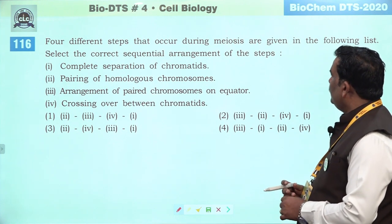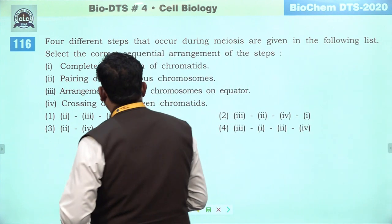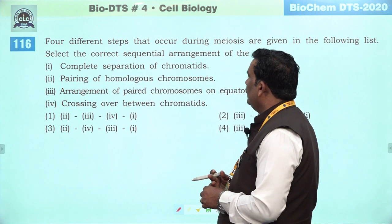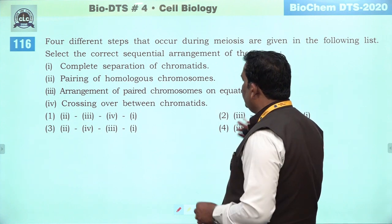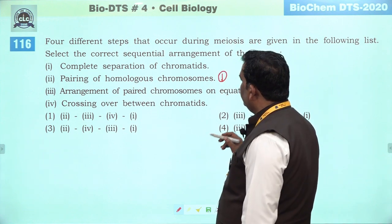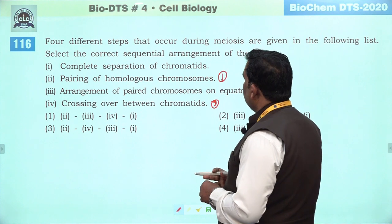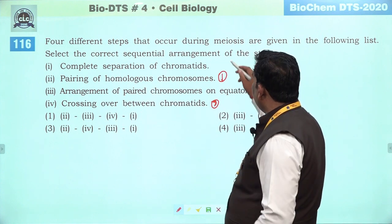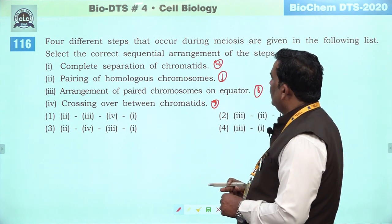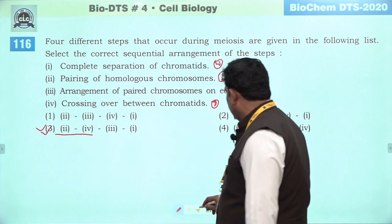Next question: four different steps that occur during meiosis — arrange in sequence. Complete separation of chromatid — yeh last mein aayega. Pairing of homologous chromosome — arrangement of paired chromosomes on equator — yeh metaphase ki hai. Crossing over. Mere according — first yeh rahega: pairing. Uske baad crossing over — second. Uske baad metaphase condition — third. Aur fourth condition mein complete separation. Second is the right answer — third is the right answer.